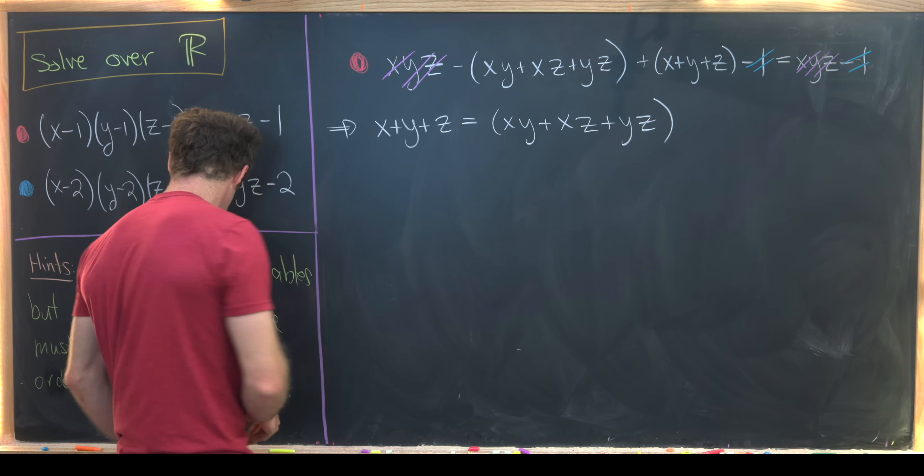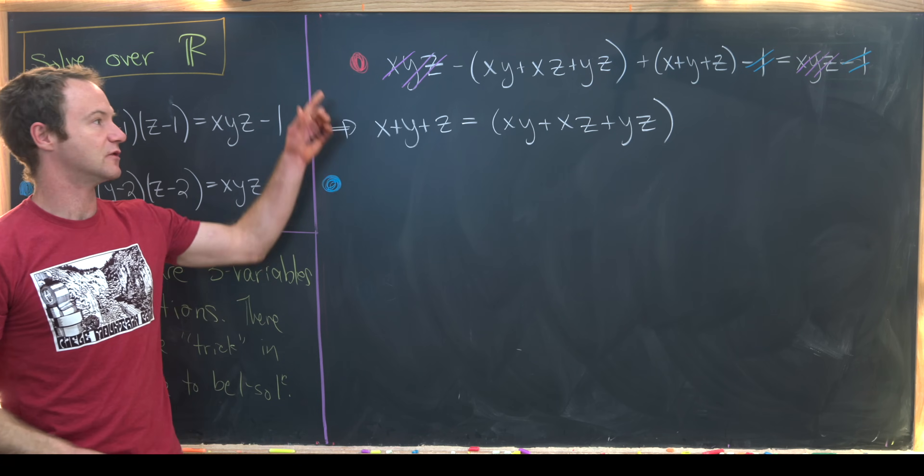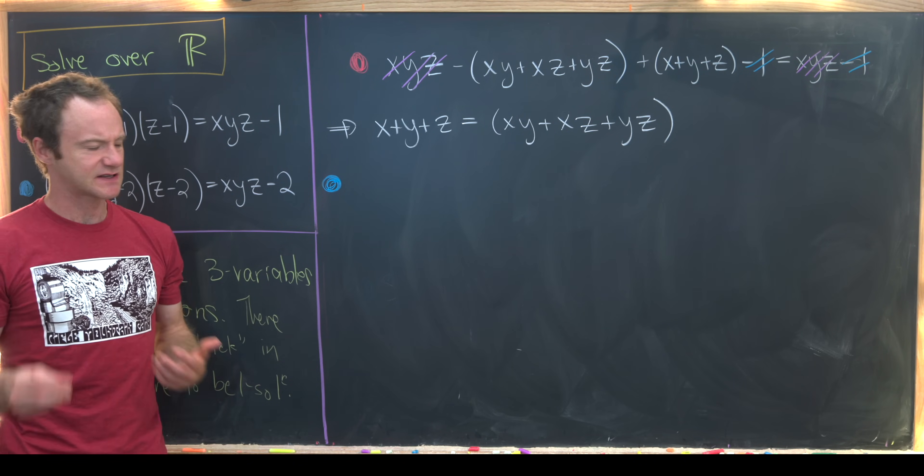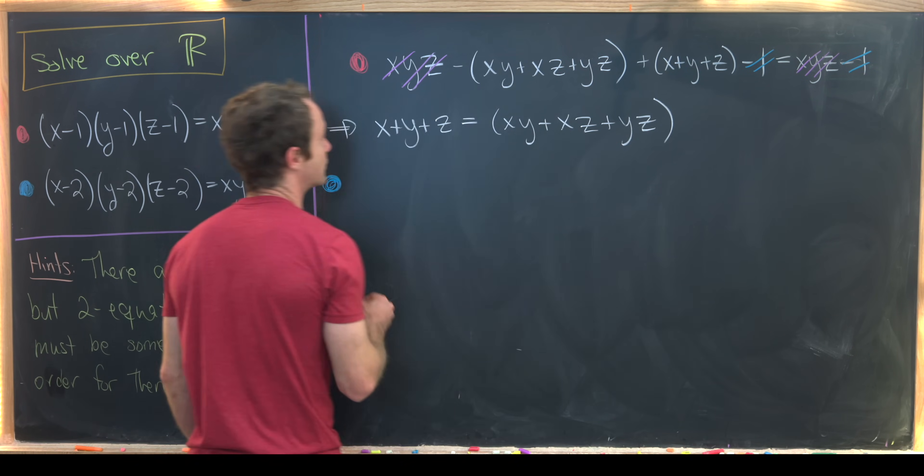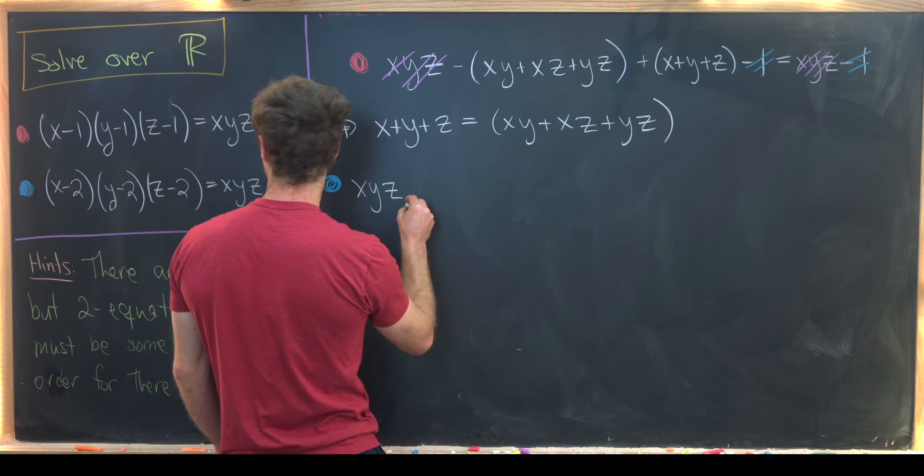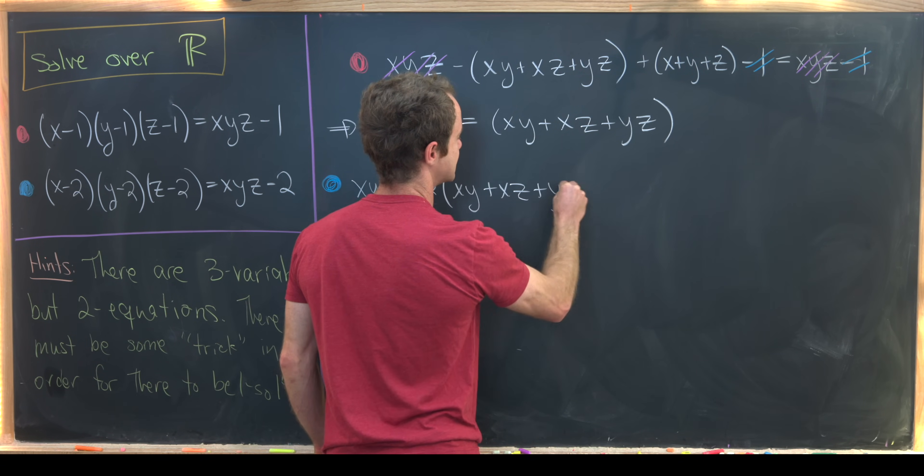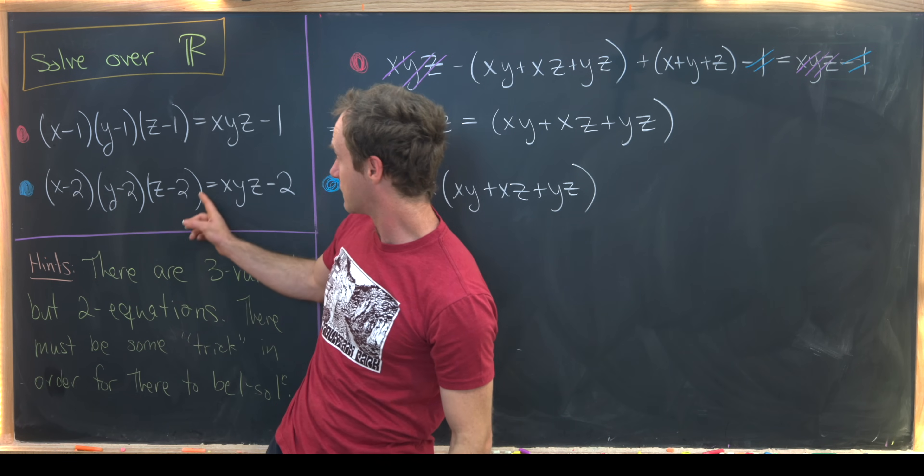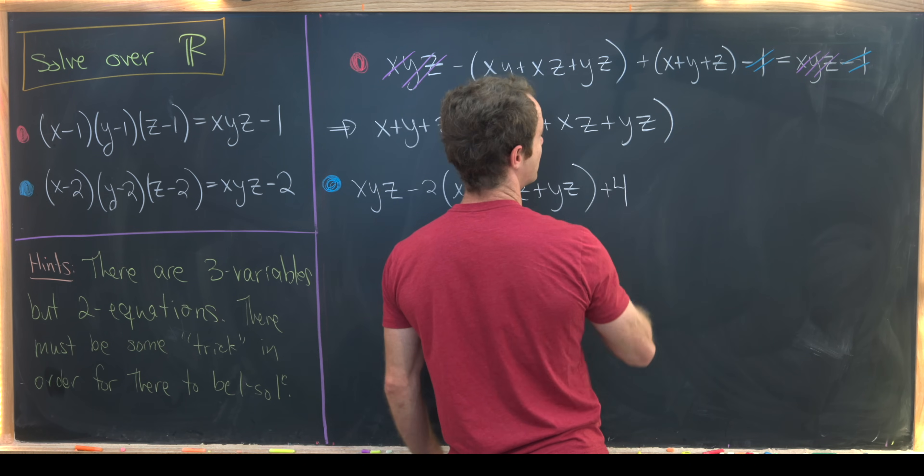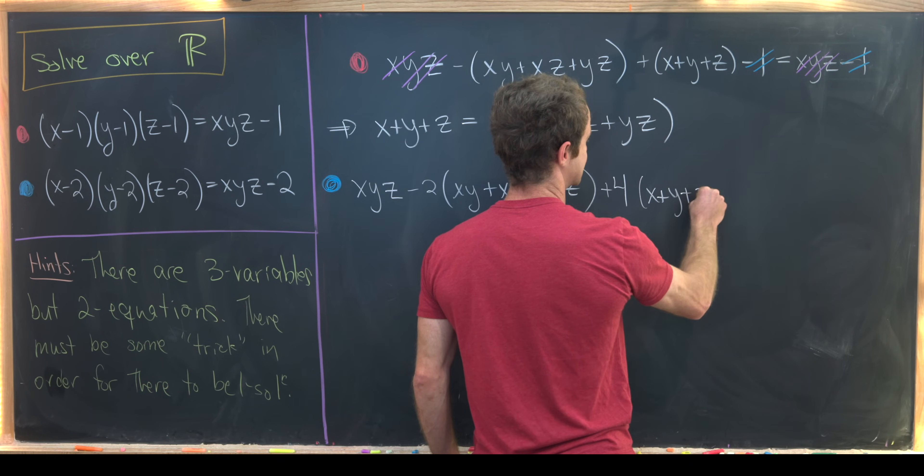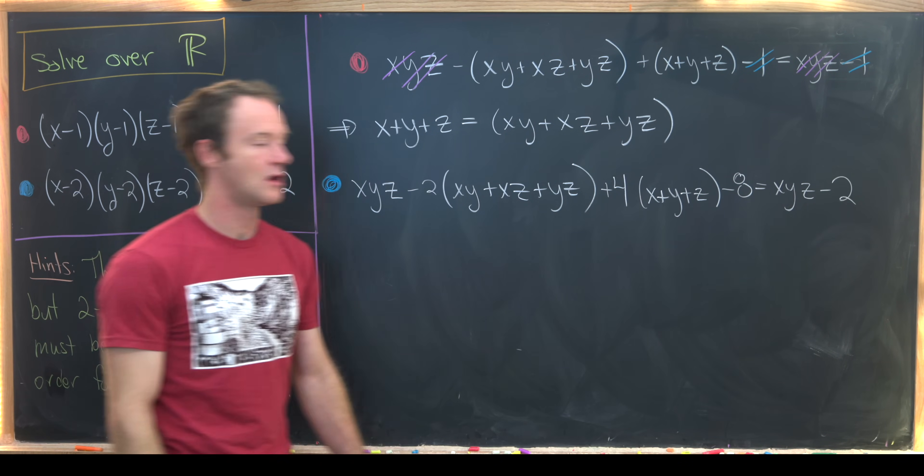Now let's dive into the other equation, which I've called blue dot, to see if we can use what we found in the red dot equation to get some further relationship between x, y, and z. We'll multiply this out pretty much the same way. We'll have xyz - 2xy + xz + yz, plus 4(x + y + z) - 8 equals xyz - 2.